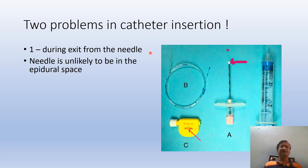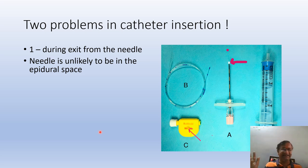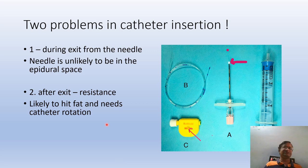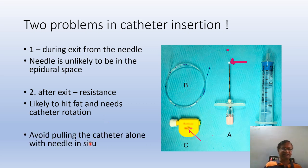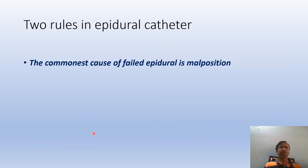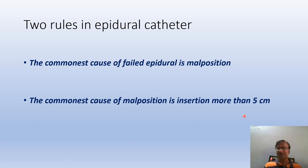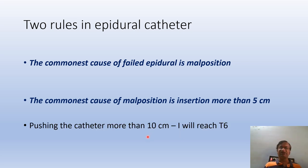Two problems exist in catheter insertion. First, during exit from the needle, the catheter doesn't advance — if the catheter doesn't go, you are likely not in the space, possibly in the interspinous ligament. After exit, if there is some resistance after 4 centimeters, it is likely to be fat — just withdraw slightly. Don't shear or cut the catheter, and avoid pulling the catheter back through the needle. The commonest cause of failed epidural is malposition, and the commonest cause of malposition is inserting the catheter more than 5 centimeters. Pushing it beyond 10 centimeters thinking it will reach T6 or T2 does not happen in 90% of cases.